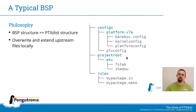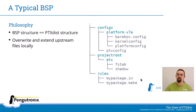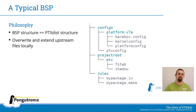Then we're having some files in the project root directory, for example an etc.fstab and an etc.shadow file which we want to install on the target. And then we also have some custom rule files for our BSP. The philosophy here is that your BSP looks just like the PTX-DISTS install directory and you can overwrite and extend the files from PTX-DISTS locally in your BSP just by copying them into your BSP and adapting them to your needs.